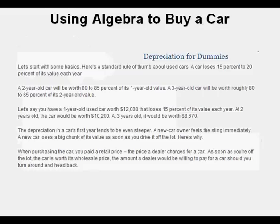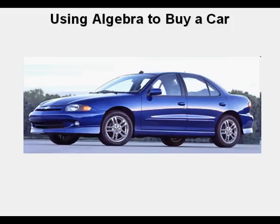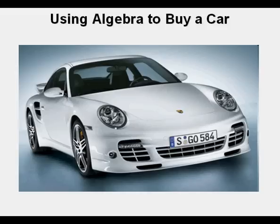I found this page in a website about buying cars. It starts out with a standard rule of thumb for used cars. A car loses 15% to 20% of its value each year. So according to this rule of thumb, a car that depreciates quickly, such as the Chevy Cavalier pictured here, may lose roughly 20% of its value from year to year. Whereas the Porsche 911 pictured here depreciates at a lower rate and may lose only 15% of its value per year.